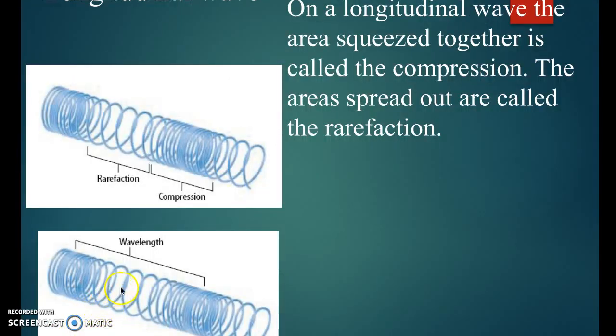Here's some property of longitudinal waves. The place where it gets really dense is called a compression. The place where it's the least dense would be a rarefaction. And the distance between two compressions or two rarefactions would be equal to one wavelength.